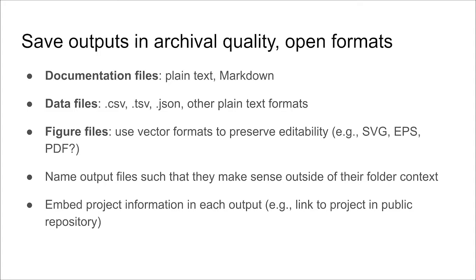It is also important to save the outputs of your work in archival quality open formats. These formats vary depending on the type of output. For example, documentation files should be saved in a plain text format such as markdown, and data files should be saved in a non-proprietary format like a comma-separated value file or other plain text formats. Make sure you're using best practices to name the output files such that they make sense outside of their folder context, and wherever possible, embed the project information in each output so that when the output file is separated from its original project folder, it becomes easy to track that file back to its original project.